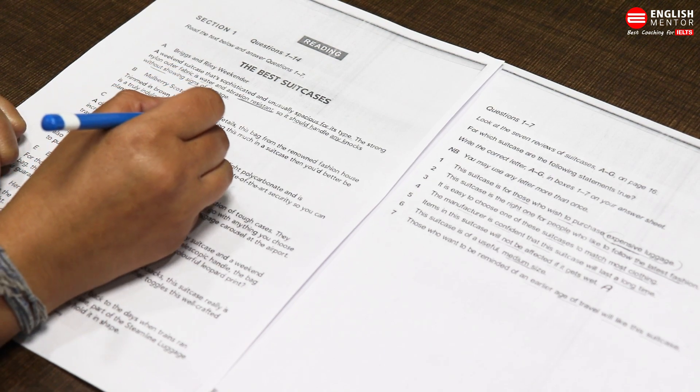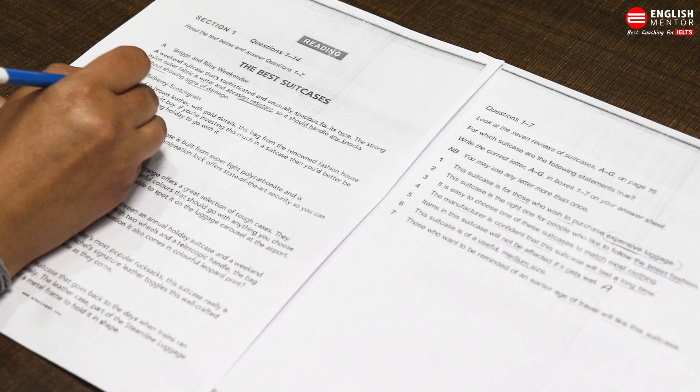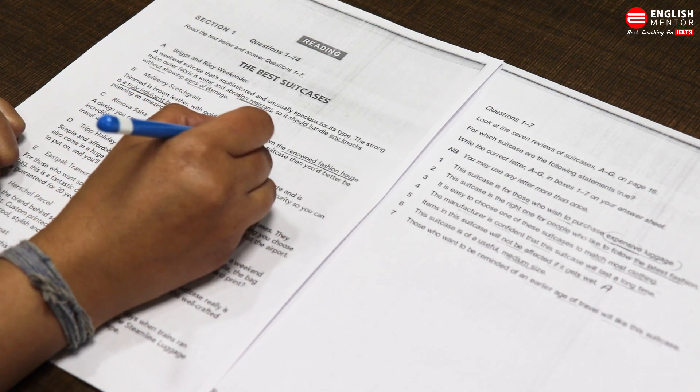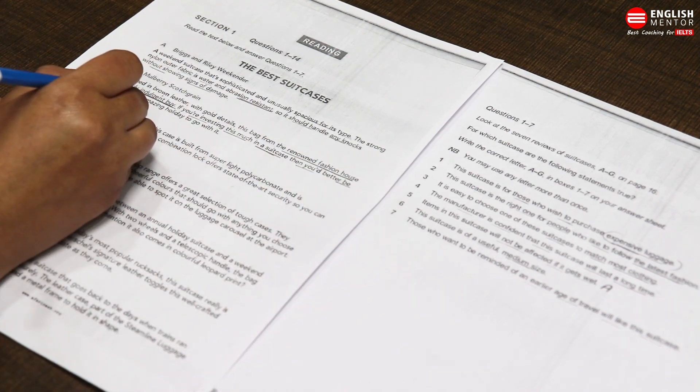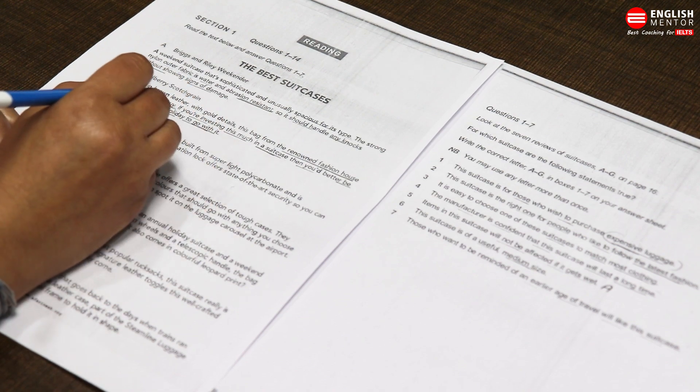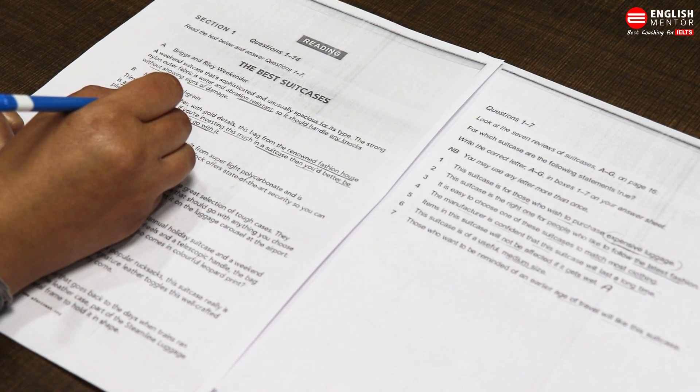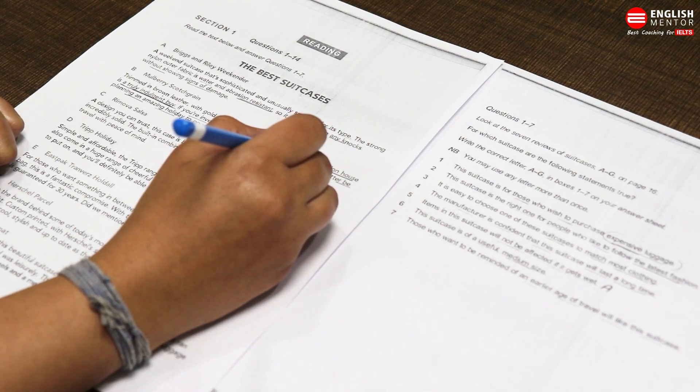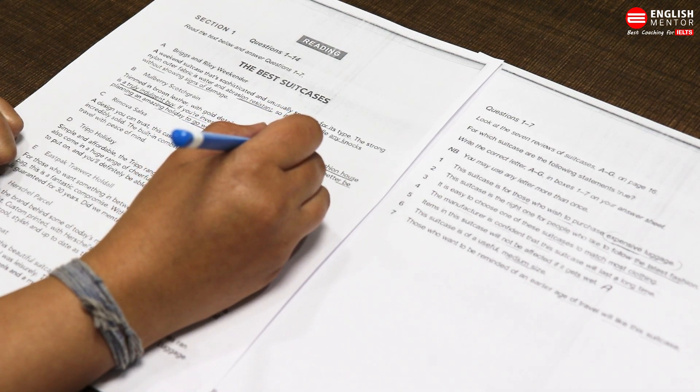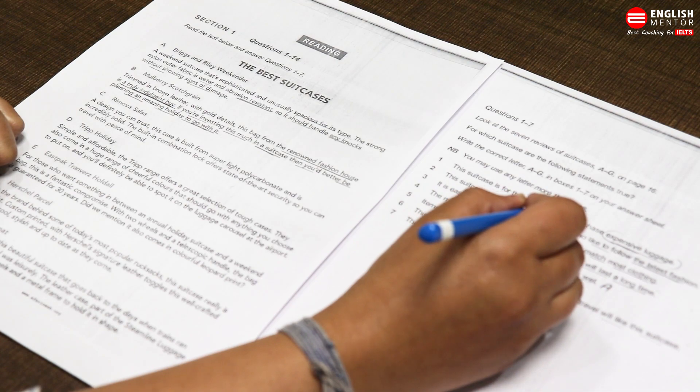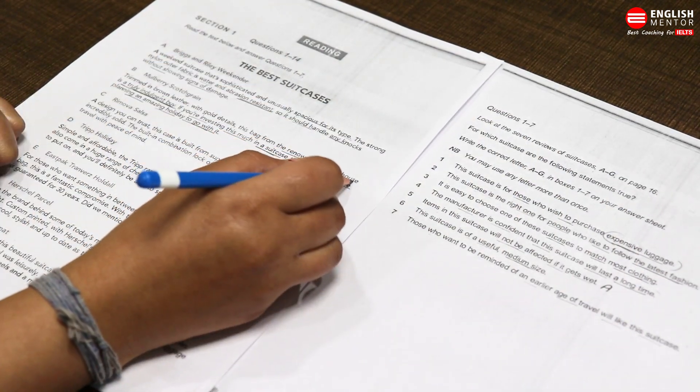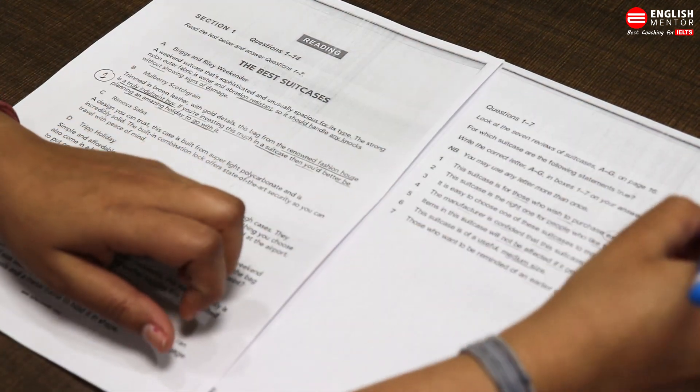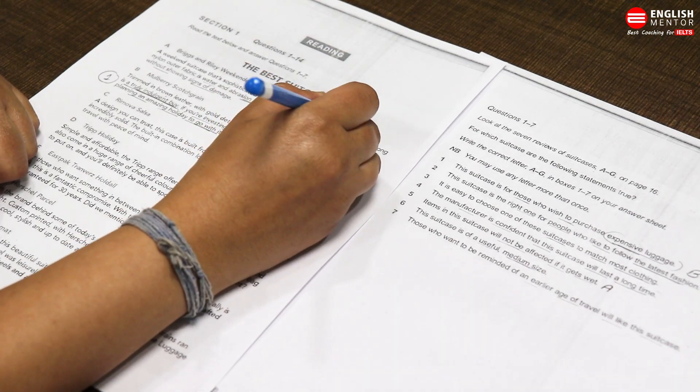Next, Mulberry: Trimmed in brown leather with gold details, this bag from renowned fashion house is truly indulgent to buy. If you are investing this much in a suitcase, you had better be planning an amazing holiday to go with it. Iska matlab truly indulgent to buy, matlab luxurious hai, expensive hai. Unhone paraphrase kiya hai ki aap isse renowned fashion house se buy karti hain, truly indulgent hai. Renowned matlab famous, popular ke baare mein baat kar rahe hain. So question number one: this suitcase is for those who wish to purchase expensive luggage. Renowned fashion house, truly indulgent to buy - paraphrasing kiya huye expensive or luxurious hone ki baat kar rahe hain. So question number one ke liye I will mark option B.